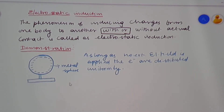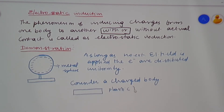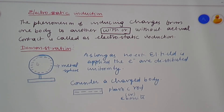Now consider another charged body. This charged body may be an ebonite or a plastic rod which has been rubbed with some suitable material. A plastic rod or an ebonite rod rubbed with wool or fur acquires negative charges. Now I am taking this plastic rod nearer to this metallic spear.